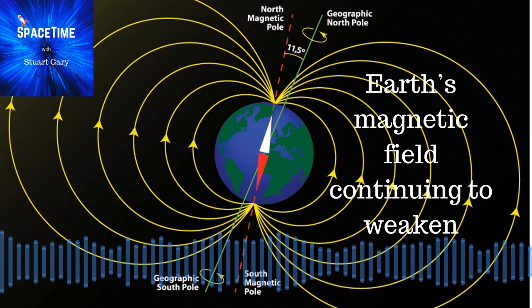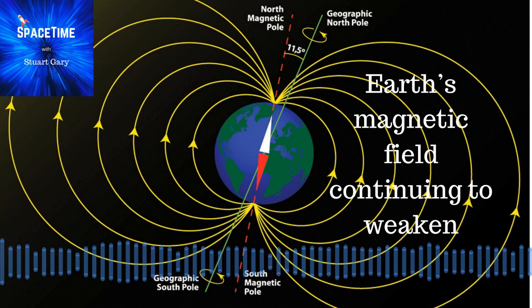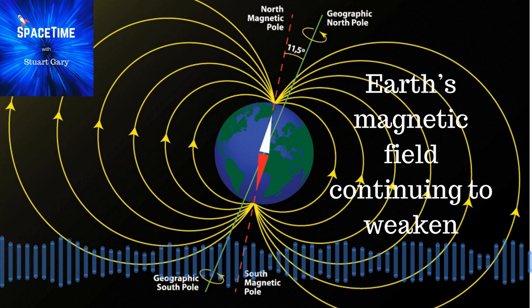The South Atlantic Anomaly has been a problem for satellites for decades. Spacecraft flying through this area are more likely to experience technical malfunctions as the shield provided by Earth's magnetic field is weaker in this region, allowing charged particles from the Van Allen radiation belts as well as the sun and cosmic rays to penetrate deeper down into the atmosphere.